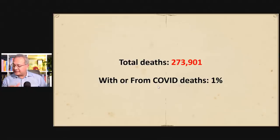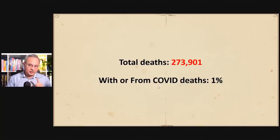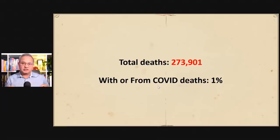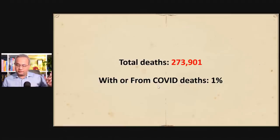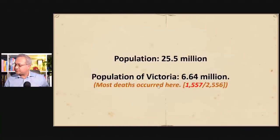Total deaths in Australia during this period, regardless of cause — all-cause mortality — was 273,901. Out of all of them, COVID-related deaths, whether dying with or from COVID-19, were 1%. So out of 273,901 people who died from the beginning of the pandemic through January 31st, only 1% were COVID-related.